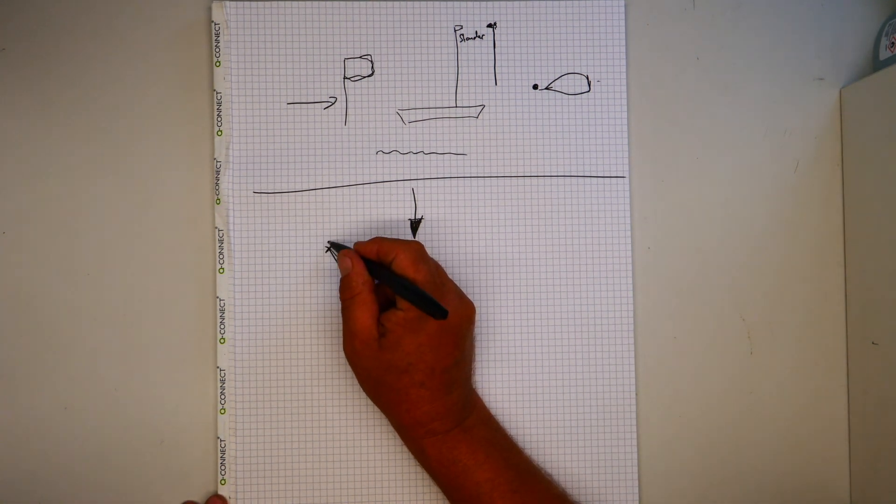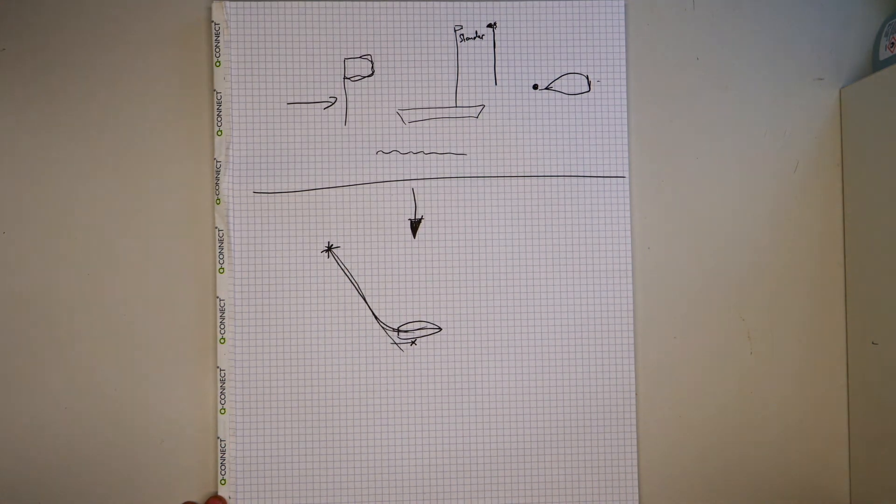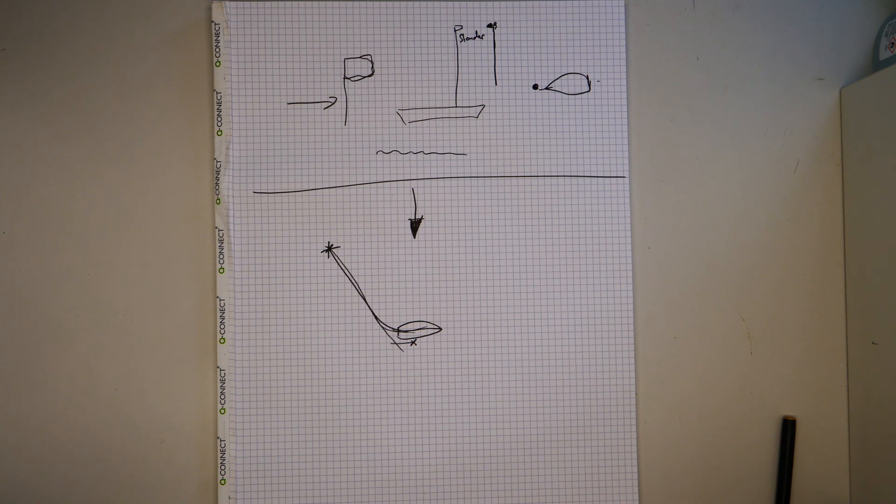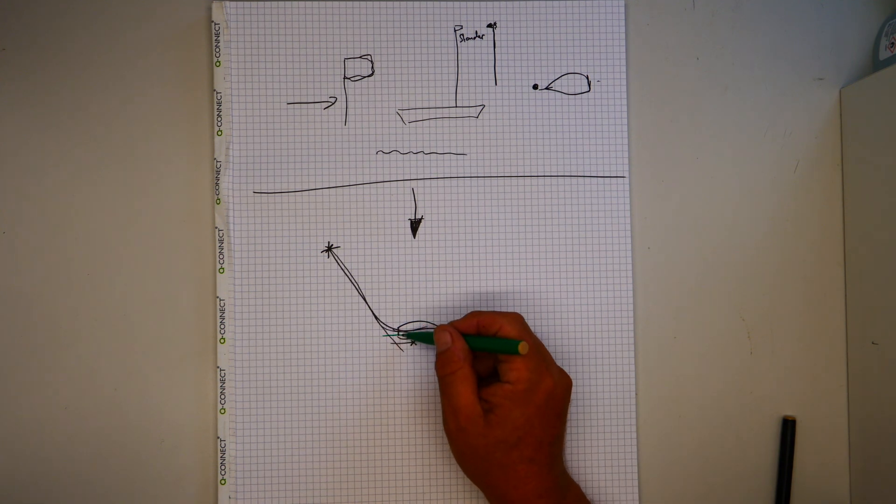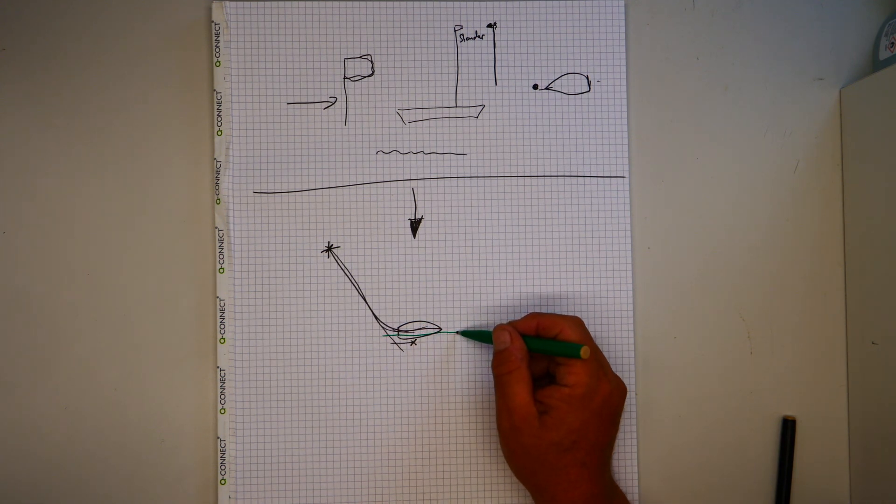Und jetzt ist es wichtig, dass wir zu diesem Punkt kommen auf dem schnellsten Weg. Ich zeichne das jetzt einmal mit einer anderen Farbe. Wenn wir am Anfang so fahren, rausnehmen um zu schauen wo der Wind herkommt und wie ich fahre.